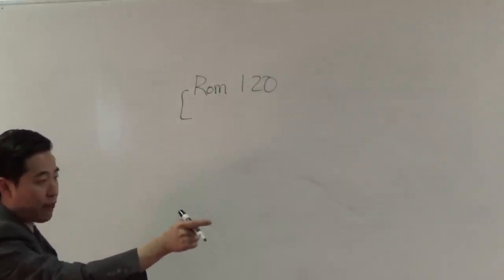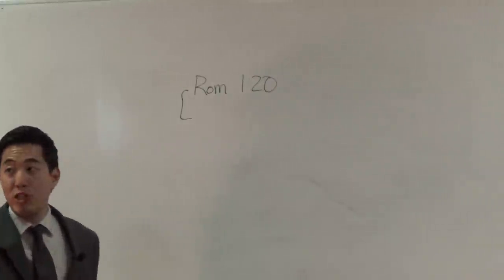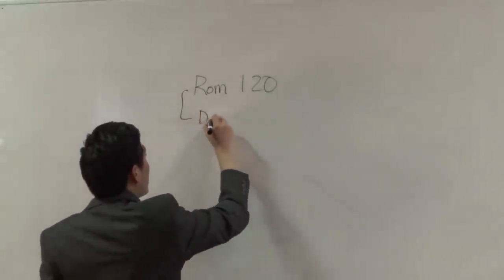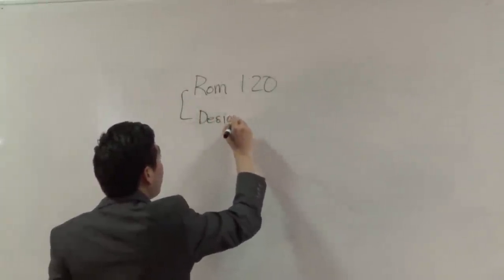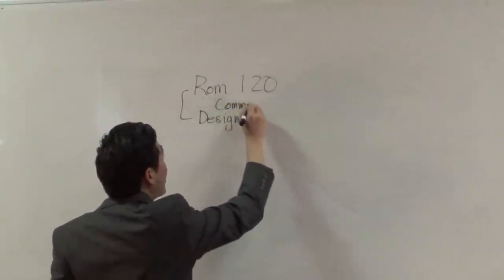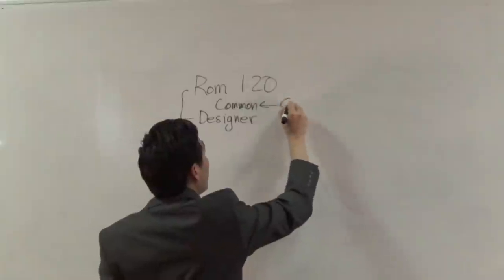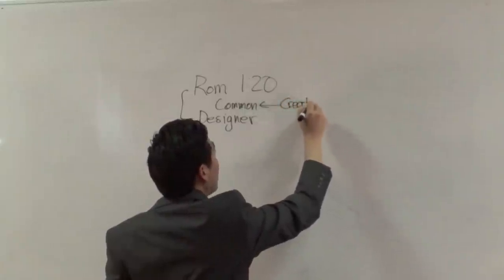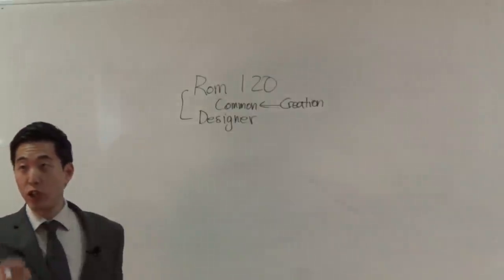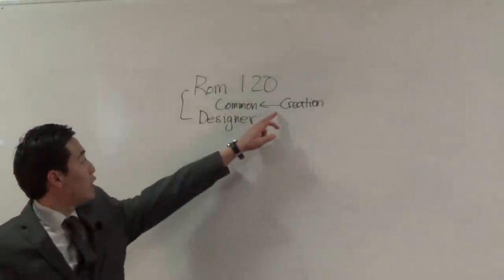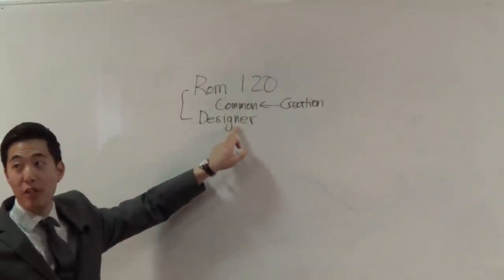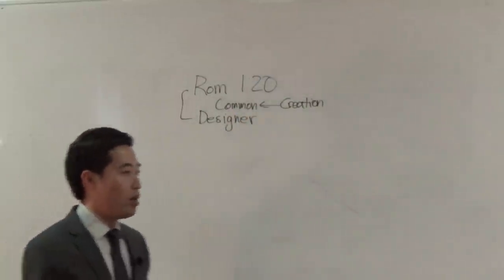According to that verse, all of creation is an imprint of the Creator. So this proves that all of creation has something in common — it's a designer. Creation shows a common Creator, a common designer.